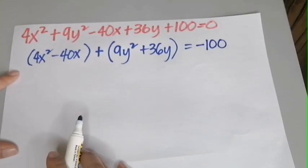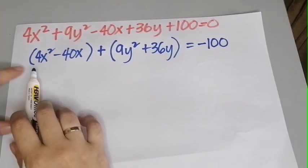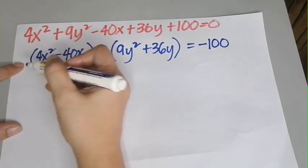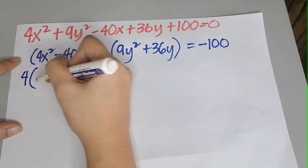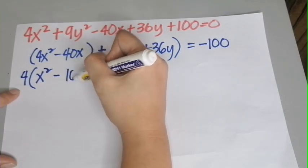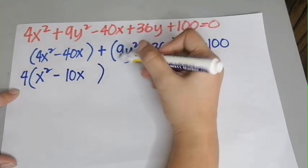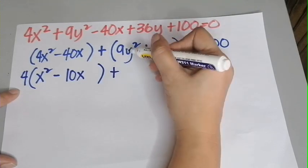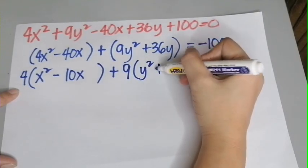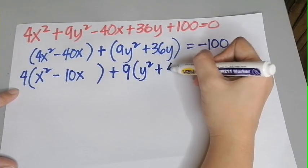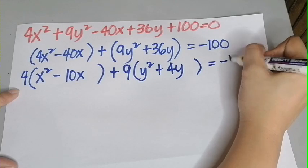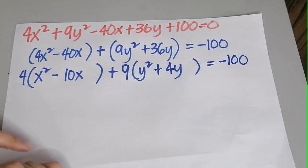Then factor out 4 from the x-group and 9 from the y-group. Factoring out 4 gives x squared minus 10x. Factoring out 9 gives y squared plus 4y. Copy the right-hand side of the equation.